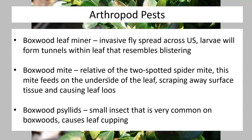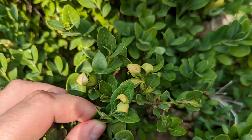Boxwood psyllid is another insect definitely causing damage to my boxwood. They cause leaf cupping and damage to the surface of the leaf tissue similar to what you'd see from boxwood mite. Right here you can see damage being caused by a boxwood psyllid — the paler green leaves are cupping, and there are damaged areas on them. Some of it is plant disease as well, but the leaf cupping is a very clear boxwood psyllid damage example.